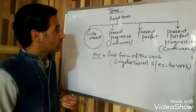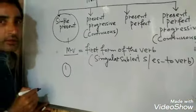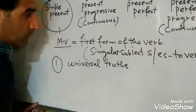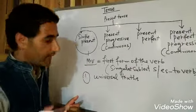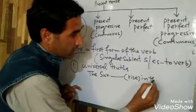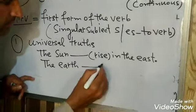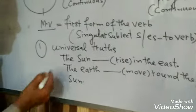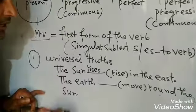Now let us see where we use simple present and what its different uses are. Number one is universal truths. Whenever you find a sentence that expresses a universal truth, use simple present. For example: 'The sun rises in the east.' Another example: 'The earth moves around the sun.' These sentences express universal truths.